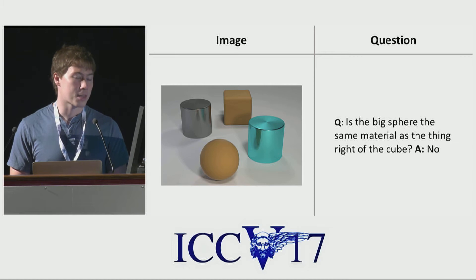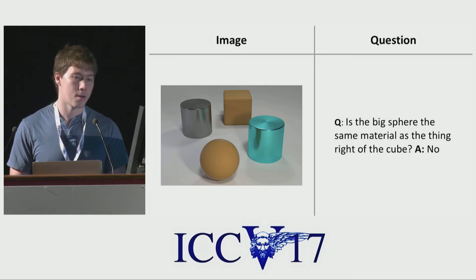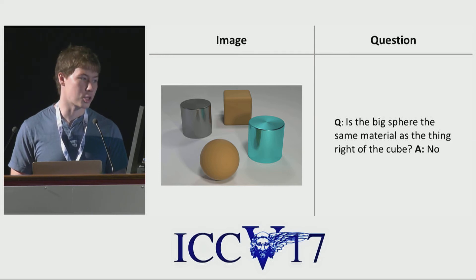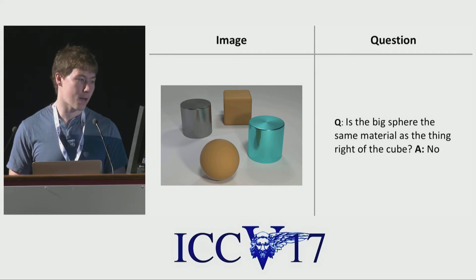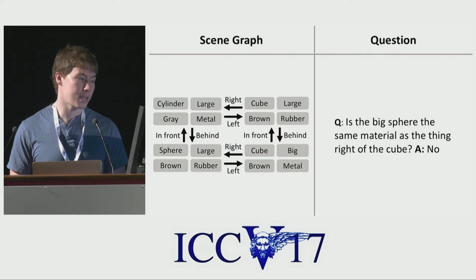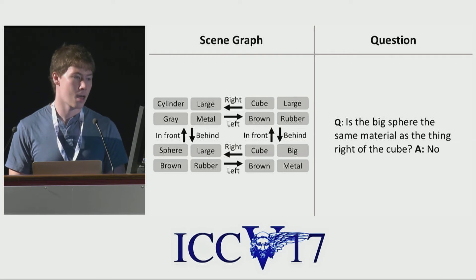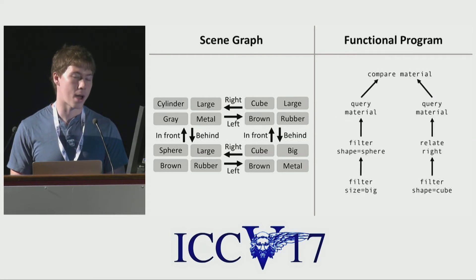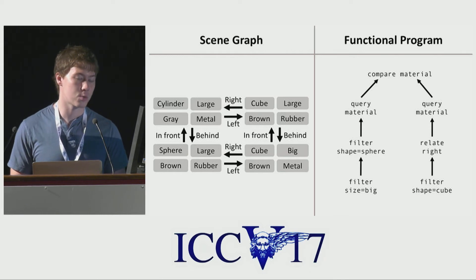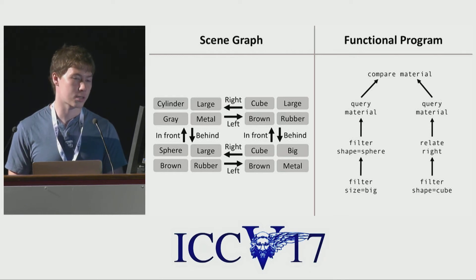We've already seen that the CLEVR dataset contains both images and questions, but we also provide structured representations of the data on both sides of this equation. On the image side, we provide a scene graph representation, which gives us the ground truth attributes and spatial relationships for all objects in the scene. On the question side, we also provide a functional program, which is a structured representation that breaks down the compositional skills we need to use in order to answer the question.